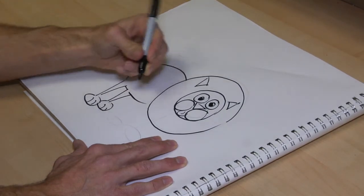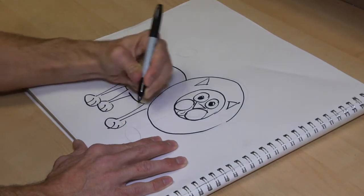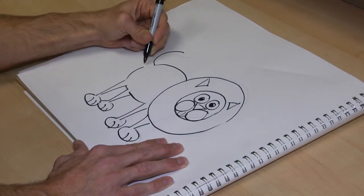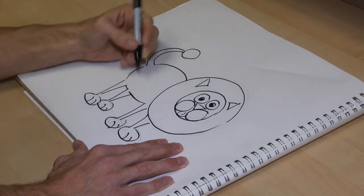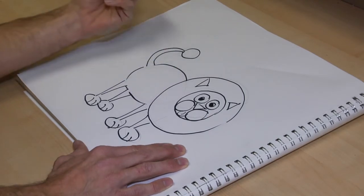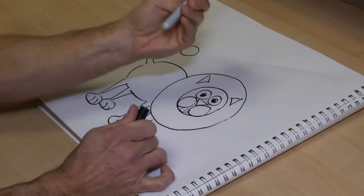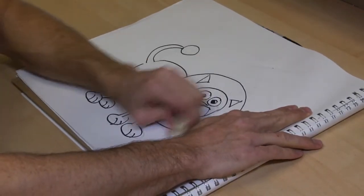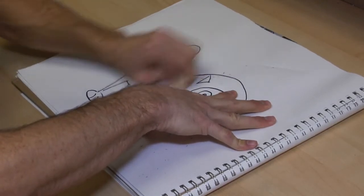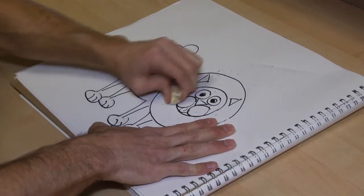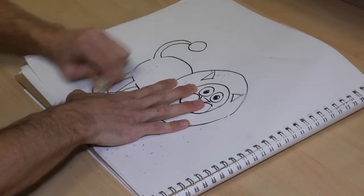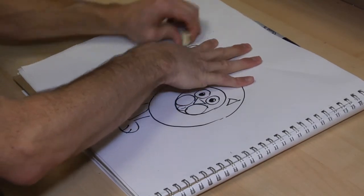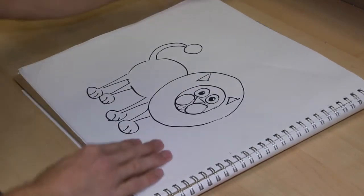We keep the details to a minimum. And when you're done, you can start erasing all your construction lines. And then you end up with your lion.